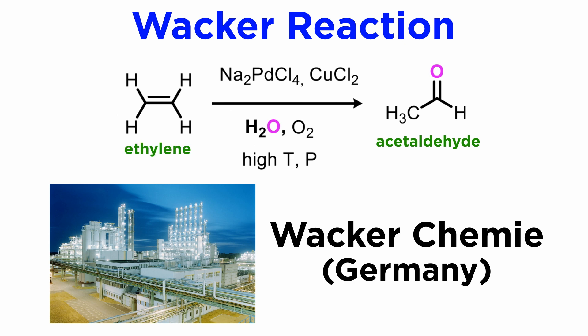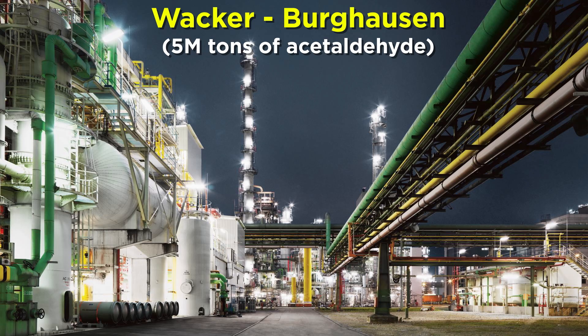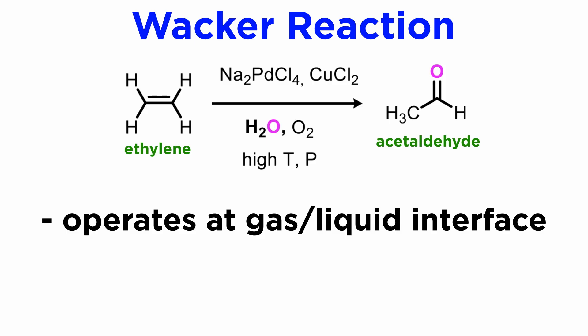Wacker was interested in ethylene as a precursor to functionalized monomers for plastic, and they discovered the oxidation of ethylene in a collaboration with another German chemical giant, Hoechst. The plant they opened in Berghausen in 1978 is still active, and has produced over 5 million tons of acetaldehyde.